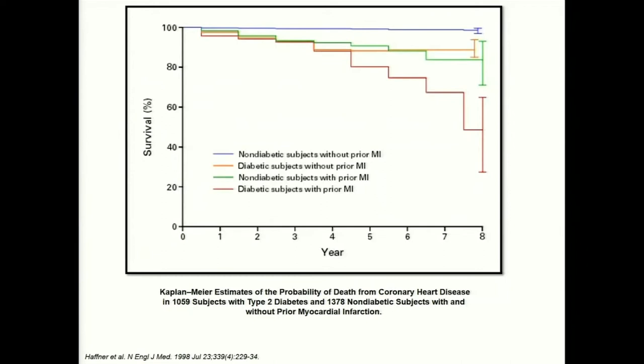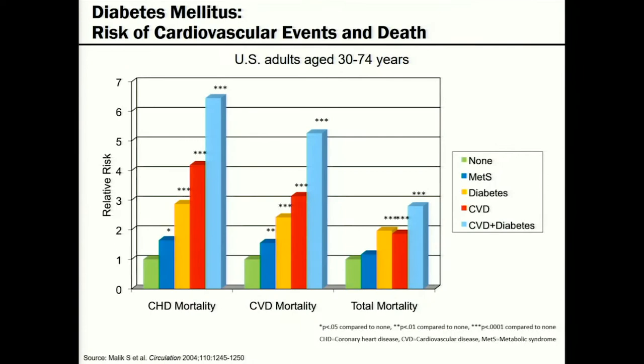The 1998 Haffner study was one of the major studies showing that diabetes is a cardiovascular equivalent. Survival was about the same for a diabetic patient with no prior MI as for a non-diabetic patient who had had an MI. That's why we classify diabetes as a cardiovascular risk equivalent. Further data shows that cardiovascular and diabetes mortality are definitely additive — combining CVD and diabetes results in significantly increased risk of death and poor outcomes.